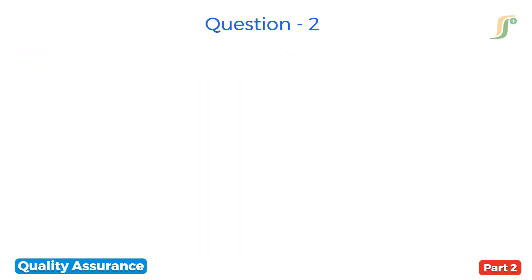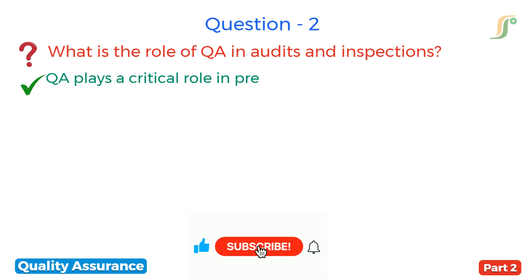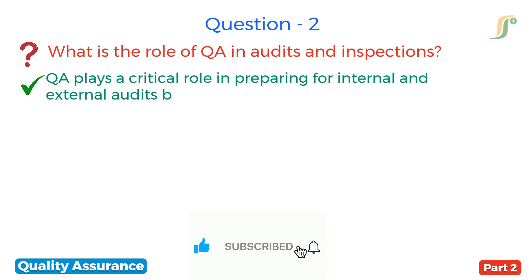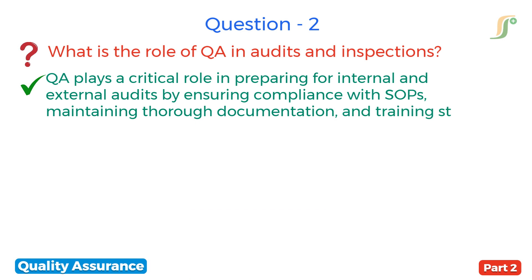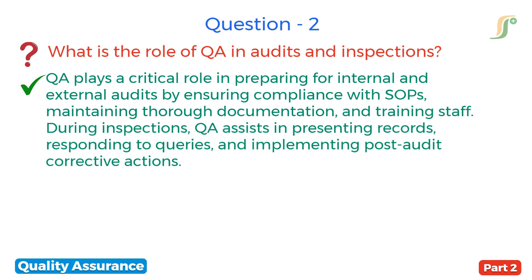The second question is: what is the role of QA in audits and inspections? QA plays a critical role in preparing for internal and external audits by ensuring compliance with standard operating procedures, maintaining thorough documentation and training staff. During inspections, QA assists in presenting records, responding to queries and implementing post-audit corrective actions.